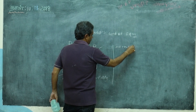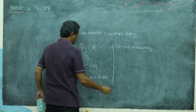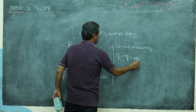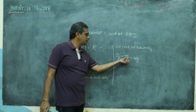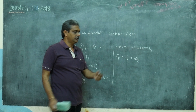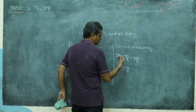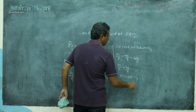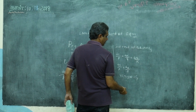Solving this equation, we follow two methods: method of grouping and method of multipliers. For method of grouping — looking at dx/P = dy/Q = dz/R — if P is purely in terms of x, Q purely in terms of y, and R purely in terms of z, then taking two of them and integrating both sides, say dx/P = dy/Q, I will get one solution u(x, y) = c₁.